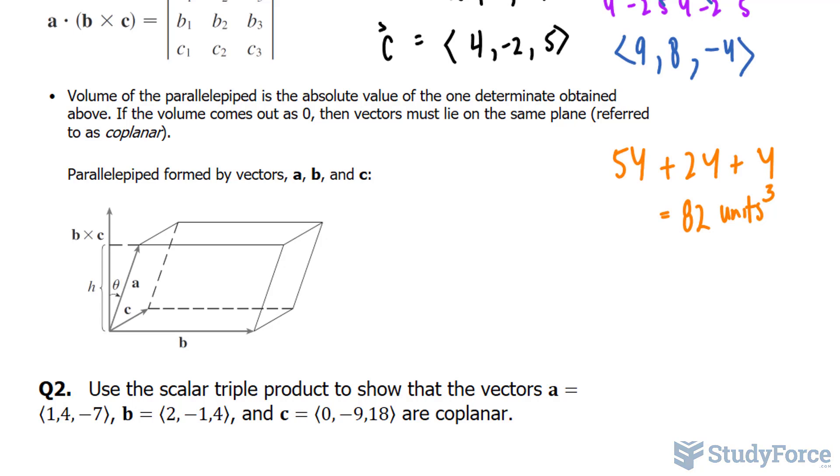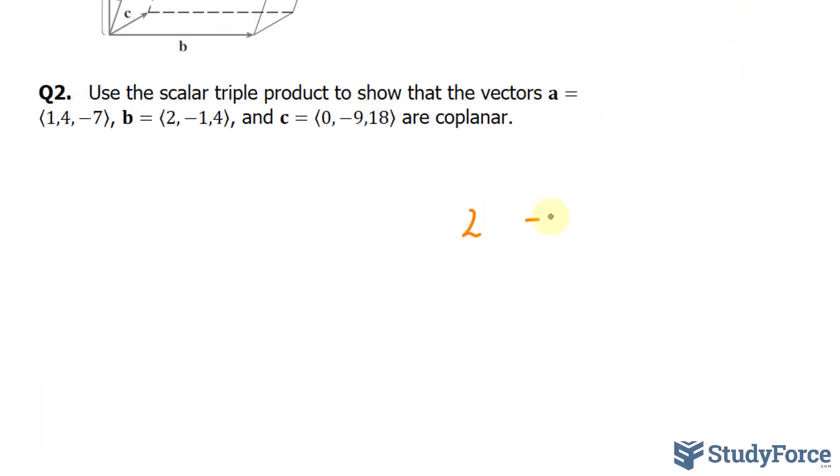I'll start by finding the cross product of b and c. So I'll write down 2, minus 1, 4, 2, minus 1, 4. And c is 0, negative 9, 18, 0, negative 9, 18.